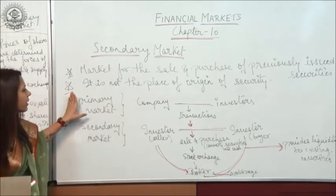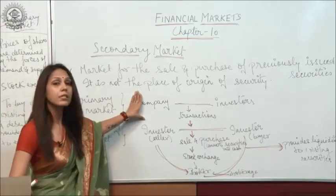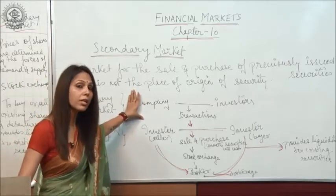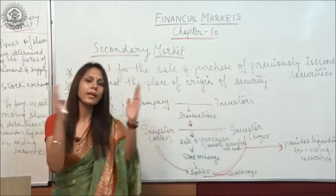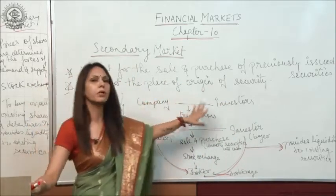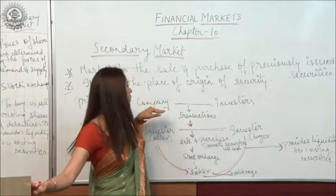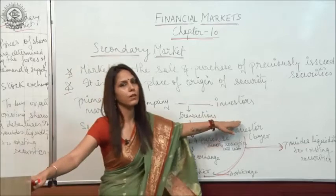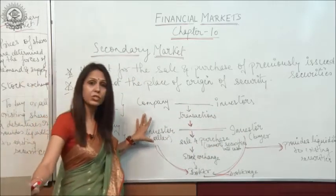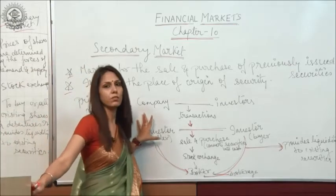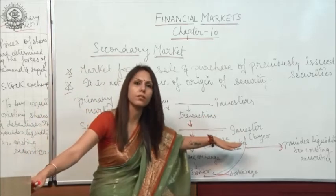In primary market, as we discussed earlier, companies issue securities to the investors. So there is a direct link between the company and the investors, and the sale of securities takes place between the company and the investors. Whereas in secondary market, the sale and purchase of securities takes place between investor and investor.